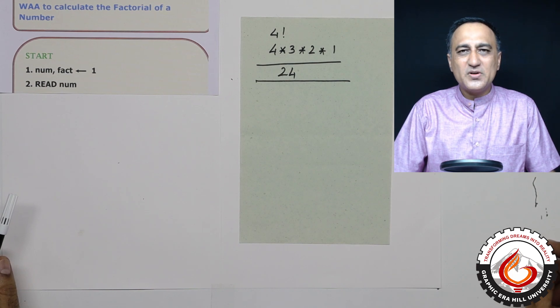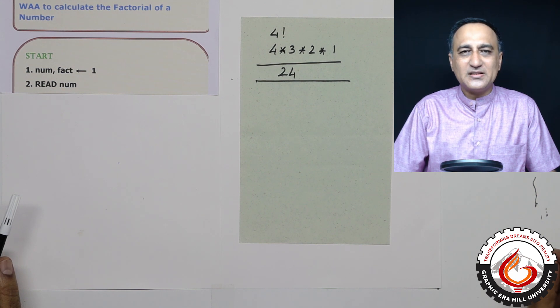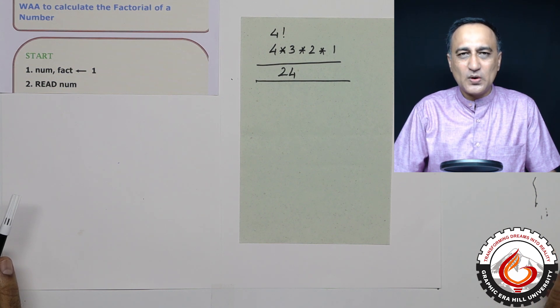In this algorithm, we shall take a look at how we can calculate the factorial of a number greater than or equal to zero. You need to understand a couple of things here. Factorial of zero is one and factorial of one is also one.